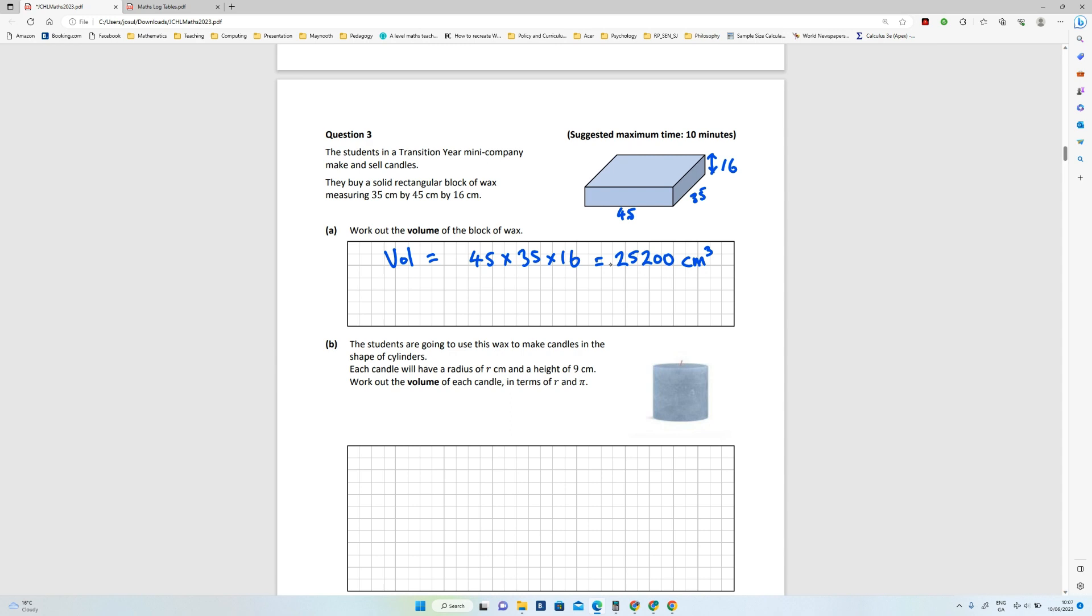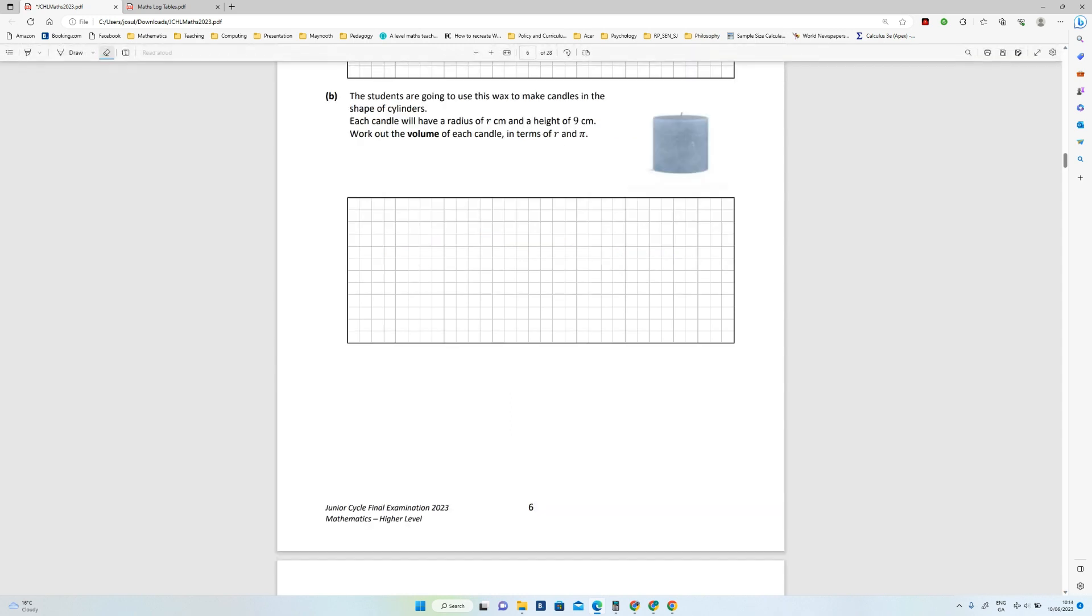Alright, so part B, the students are going to use this wax to make candles in the shape of cylinders. Each candle will have radius of r and a height of 9. Okay, so that's 9 there between here and here, and the radius is there.